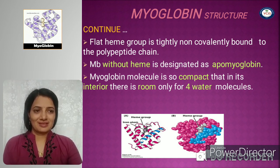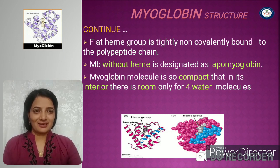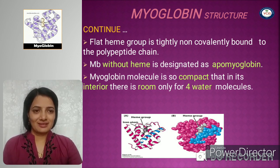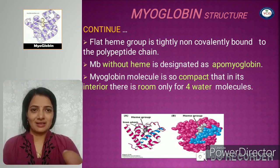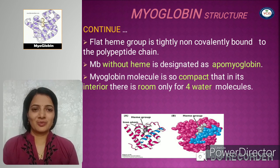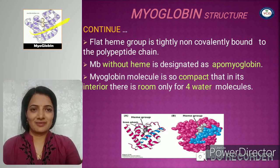In this image, a space-filling model shows the heme group at the center — notice how compact the structure is. The ribbon model also shows the heme group, and in this image there is clear identification of how the heme group is fitted in the cleft.